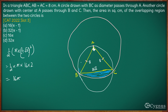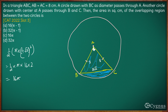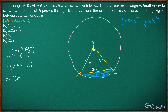Now to calculate the area of the lower segment of the bigger circle, we take the total sector and subtract the area of triangle ABC. This sector is a quarter circle with radius 8, so its area is one-fourth of π × 8² = 64π, giving 16π. The area of triangle ABC is half × 8 × 8 = 32. So the segment area is 16π minus 32.